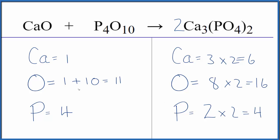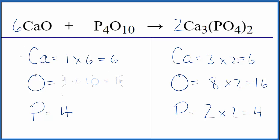If we put a six in front of the CaO, now we're balancing the calciums. One times six gives us six — those are balanced. We need to update the oxygen atoms: one times six is six, plus ten here, that gives us sixteen.